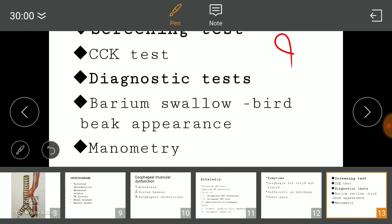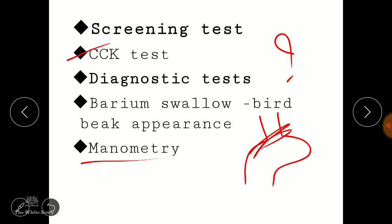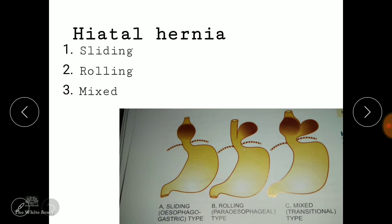To screen for achalasia, you do a CCK test. Diagnostic tests include barium swallow, which shows a bird beak appearance, and manometry to assess esophageal pressures. Hiatal hernia is a hernia through the hiatus, where the esophagus or stomach moves above the diaphragm. It may be three types: sliding, rolling, and mixed.